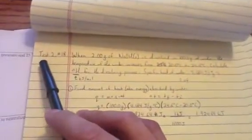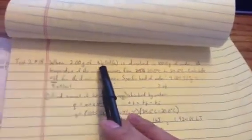So here is test number two, number eighteen rather. We're given when 2 grams of NaOH is dissolved in 100 grams of water, the temperature of the water increases from 20 degrees Celsius to 24.6 degrees Celsius. So let's calculate the total change in enthalpy for the dissolving process.